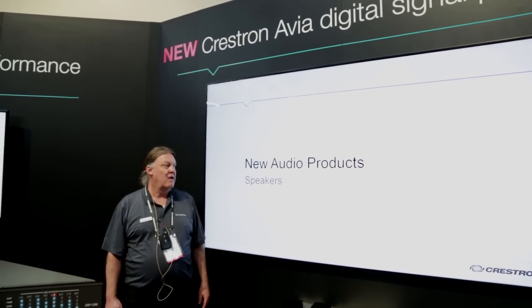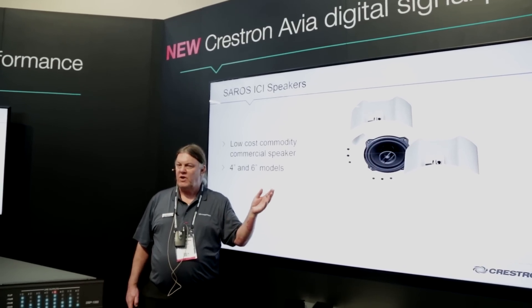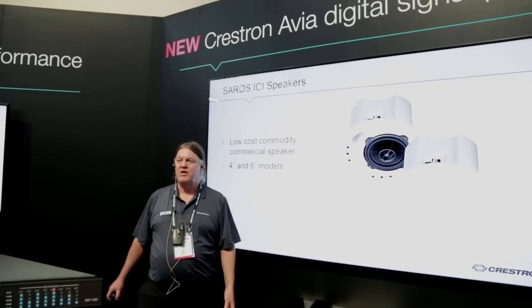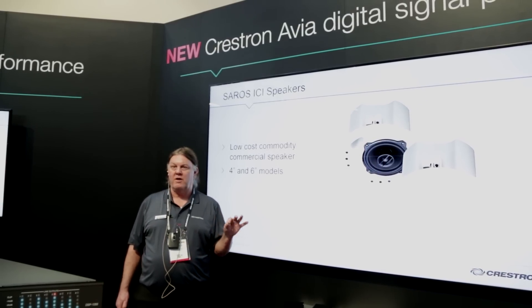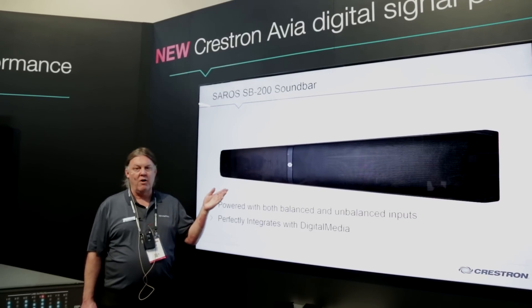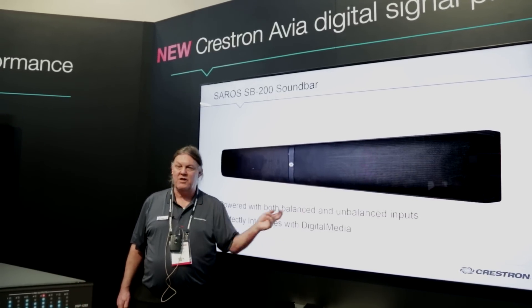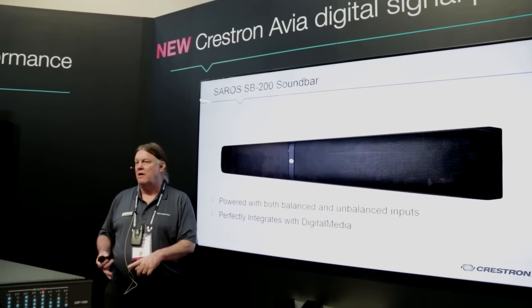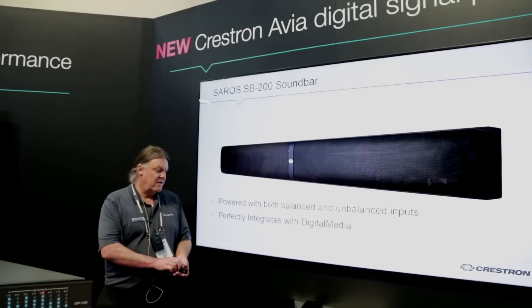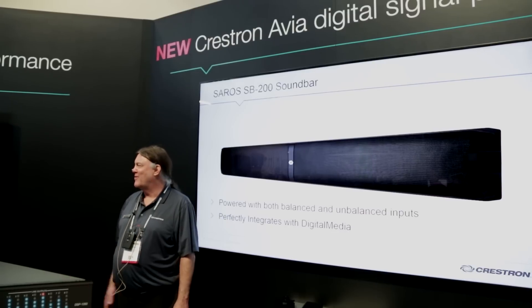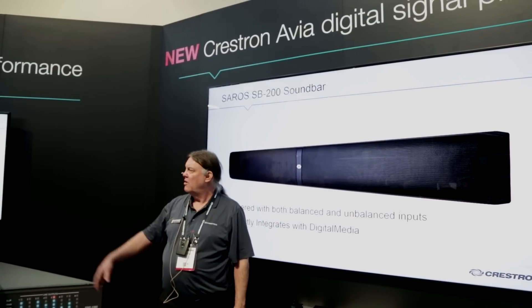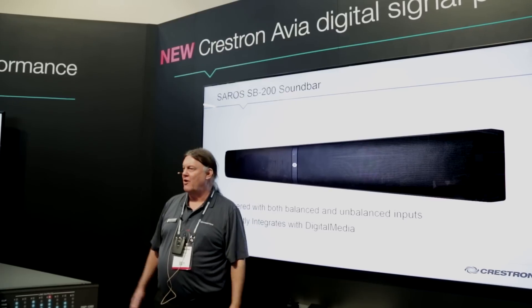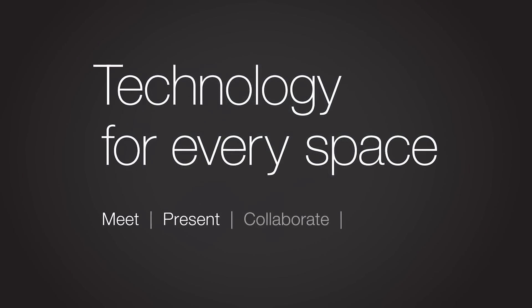We have two new loudspeakers — a new addition to the Saros line. These are the low-cost commodity speakers you send on a job by the palletful, doing hotels and convention centers and the like, competing directly with the market leaders in those two categories. We also have a new sound bar powered with balanced and unbalanced inputs for easy analog interface to RL and to DM. And that is the story on the new Crestron audio line. If you have any questions, Matt and Mitch are back here demonstrating the tool. We have the amplifiers on this side, the DSPs on that side, and we'd all be happy to talk to you and answer any questions. Thanks a lot.